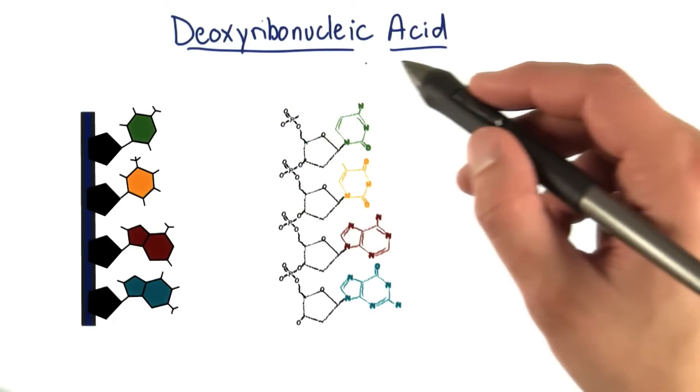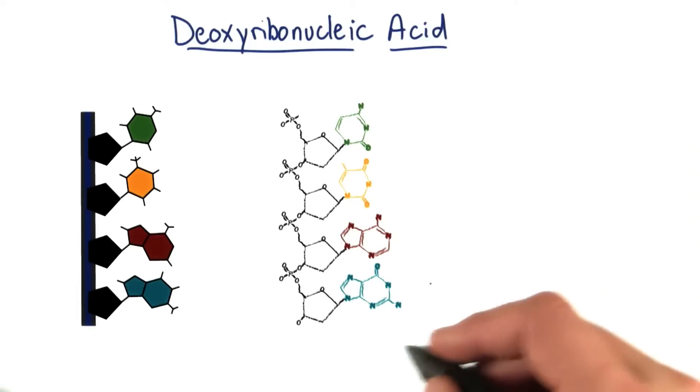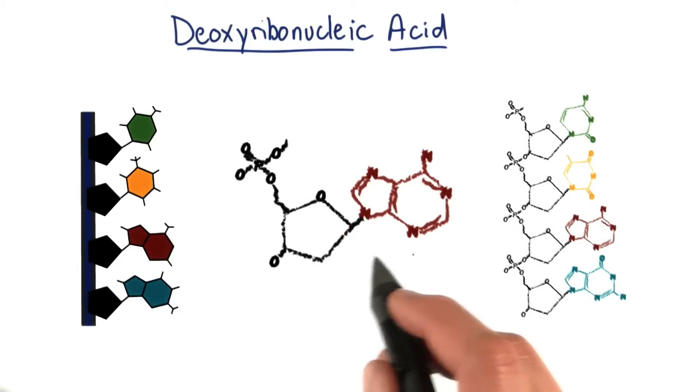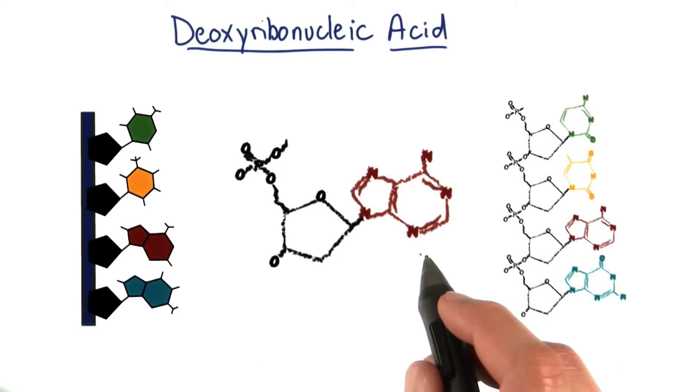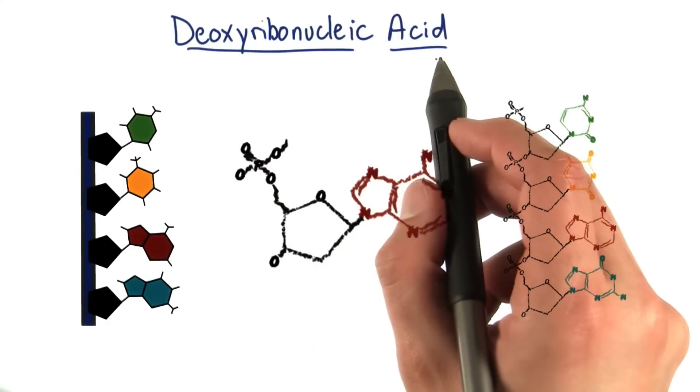The name deoxyribonucleic acid is simply a useful term to describe this chemistry. Take this individual nucleotide here that has a nitrogenous base adenine attached. Now there are four parts to the title deoxyribonucleic acid.